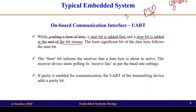The start bit informs the receiver that a data byte is about to arrive. When the receiver first receives the start bit, it knows that data is going to arrive, so it starts polling the receiver line for data according to the baud rate settings. Based on the baud rate setting of the transmitter, it polls the receiver line to receive the transmitted data.